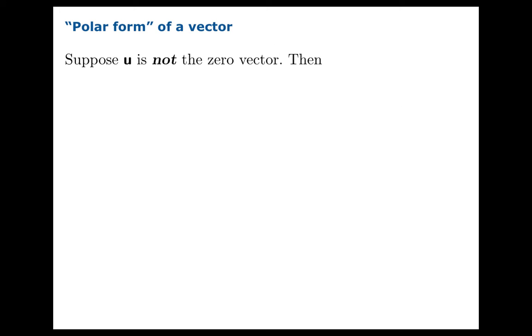We're going to end with a few slides on the polar form of a vector. And this is going to be a little bit of a journey here for a few slides. Just be patient and you'll see where the polar-ness comes from. Suppose u is not the zero vector. Then we can write u as the norm of u times the reciprocal of the norm of u times u.